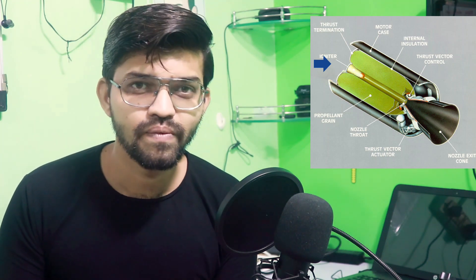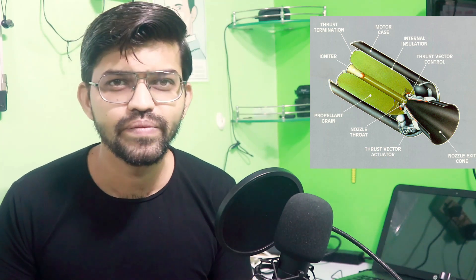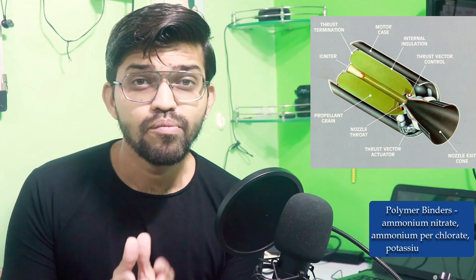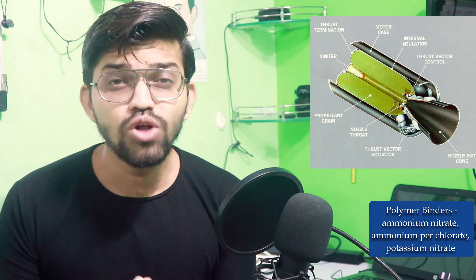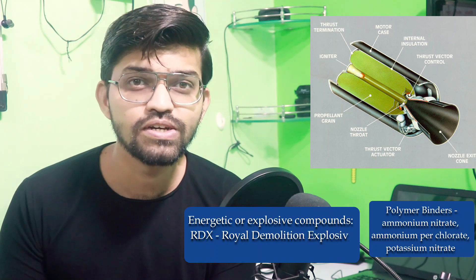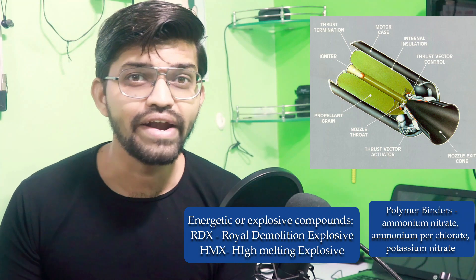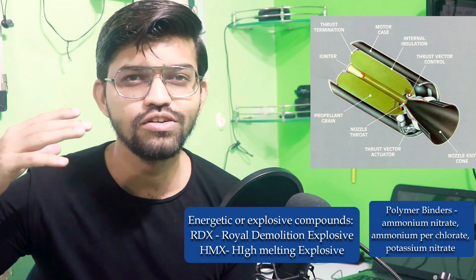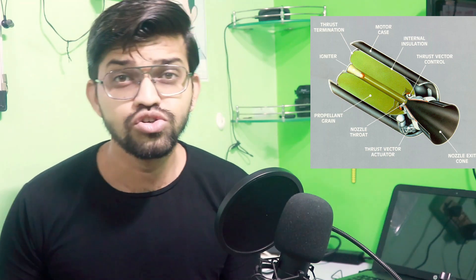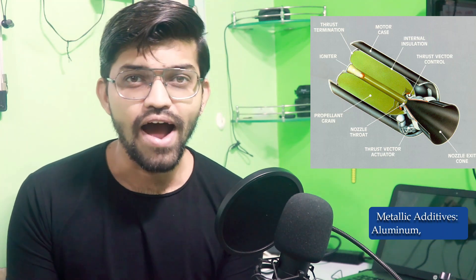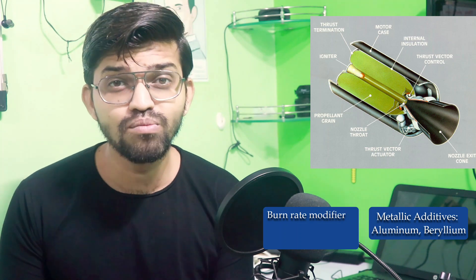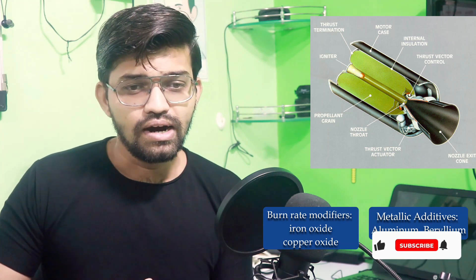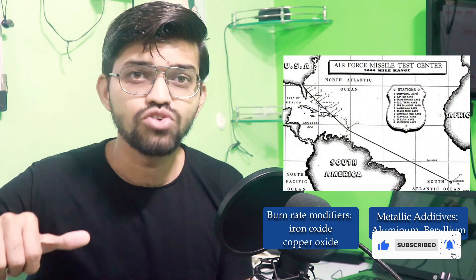This composite homogeneous mixture is very important. It consists of a polymer binder with flakes, which can be ammonium nitrate, ammonium perchlorate, or potassium nitrate. It also consists of energetic and explosive compounds such as RDX and HMX — RDX stands for Royal Demolition Explosive and HMX stands for High Melting Explosive. You may have heard of RDX as it is frequently associated with high explosives. Additionally, there are metallic additives such as aluminium and beryllium.